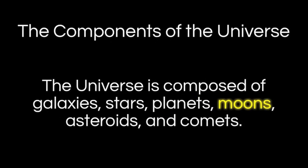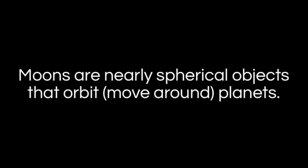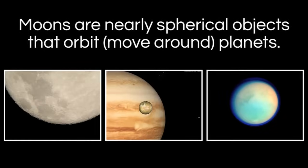What about moons? A moon is similar to a planet with one key difference: while planets move around stars, moons move around planets. They are fairly large, nearly spherical objects, but they orbit planets. On the left is our moon which orbits the Earth. In the center you see Jupiter and two of its many moons, Io and Ganymede. And on the right is a smaller moon called Titan, one of the moons of Saturn. Titan is interesting because we think there might be life there — many people assume life has to be on a planet, but who's to say life can't exist on a moon?